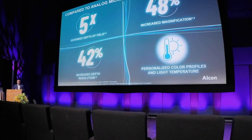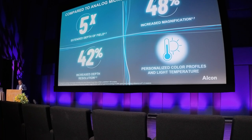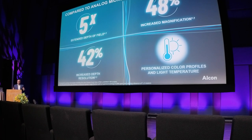High-quality precision: it gives you a five-times extended depth of field. You can have a 48% increase in magnification on top of your microscope's magnification, which is definitely beneficial. You can have increased depth resolution, meaning that across all the depth of field you see with equal resolution — something that is not the case with an analog microscope. You can also have personalized color profiles and create your own digital filters, giving you limitless opportunity to modify the image.